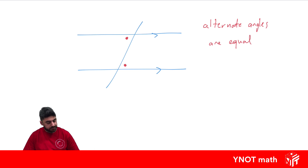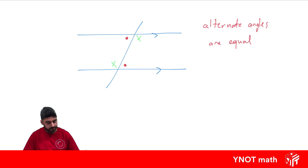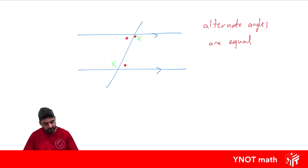You can have the other two angles being alternate as well, because they're also inside the parallel lines and on opposite sides of the transversal. They always form like a Z shape inside. So you can see this angle and this angle forming a Z shape, and this one and this one also forming a Z shape.